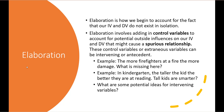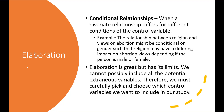A spurious relationship is where the relationship we are seeing doesn't really exist — it is random. So if the relationship between race and home ownership is spurious, there is no real relationship; what we see is random chance or caused by another variable. Conditional relationships are when a bivariate relationship differs for different conditions of the control variable — for example, religion's impact on abortion views might differ depending on whether a person is male or female. Elaboration is great but has its limits, as society is so complex that we cannot include all potential extraneous variables. We must carefully pick and choose which control variables to include.